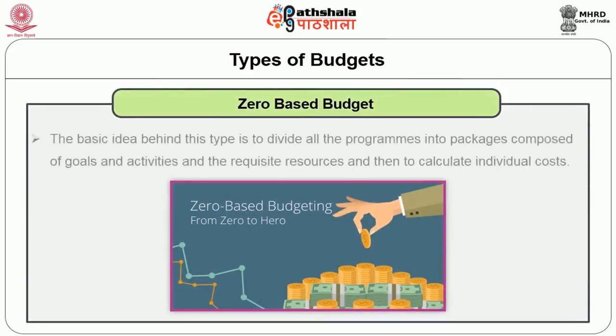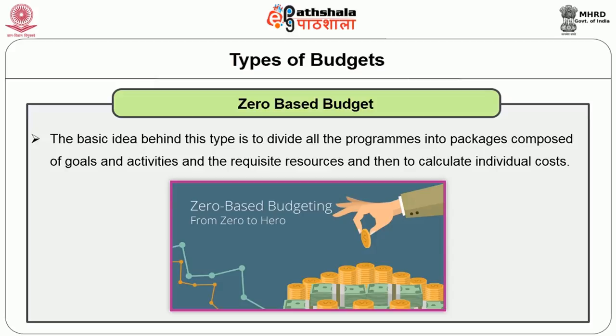Ninth, Zero-based Budget — developed by Peter A. Phyrr in 1970, this type of budget gained popularity during the regime of Jimmy Carter, who adopted it for all federal government agencies in 1979. The basic idea behind this type is to divide all the programs into packages composed of goals, activities, and the requisite resources, and then to calculate individual costs. By starting with the base zero, costs are calculated fresh for every package every year.